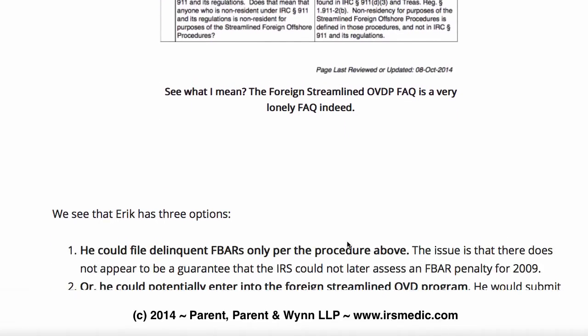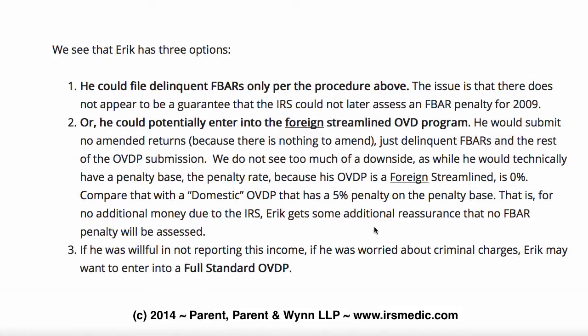So what are Eric's options? Well, he could file delinquent FBARs only per the procedure above. The issue is there does not appear to be a guarantee that the IRS could not later assess an FBAR penalty for 2009. Or he could potentially enter into a foreign streamlined offshore program. In that case, he would submit no amended returns — there's nothing to amend — just those delinquent FBARs with the rest of the OVDP submission. There's not much of a downside, because while he does technically have a penalty base for 2009, the penalty rate under the foreign streamlined OVDP is 0%.